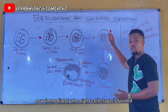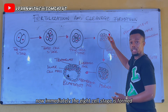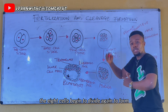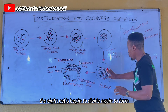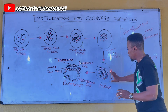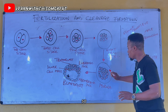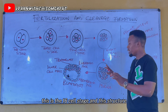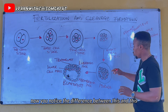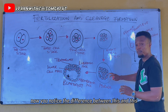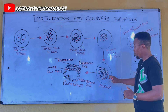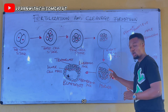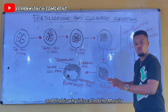Immediately the eight-cell stage is formed, the eight cells divide again to form the 16-cell stage. At this 16-cell stage, the structure looks like a mulberry — and that is why it is called the morula.